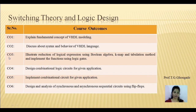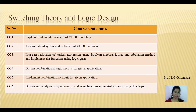Course outcome number 3 is reduction of logical expressions using Boolean algebra, K-map and tabulation method, and implement the functions using logic gates. Boolean algebra talks about the Boolean functions — various functions that you want to implement. Let's say we want to implement an adder, subtractor, and so on. When we talk about Boolean functions, there are various ways to represent these functions and then how to manipulate them.